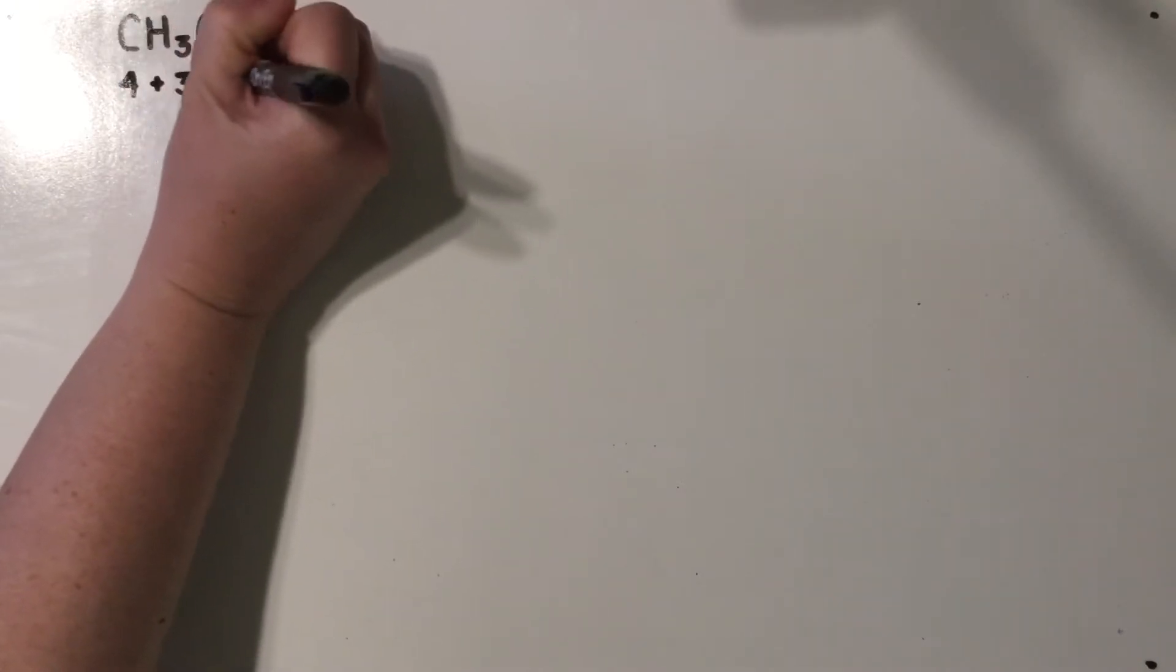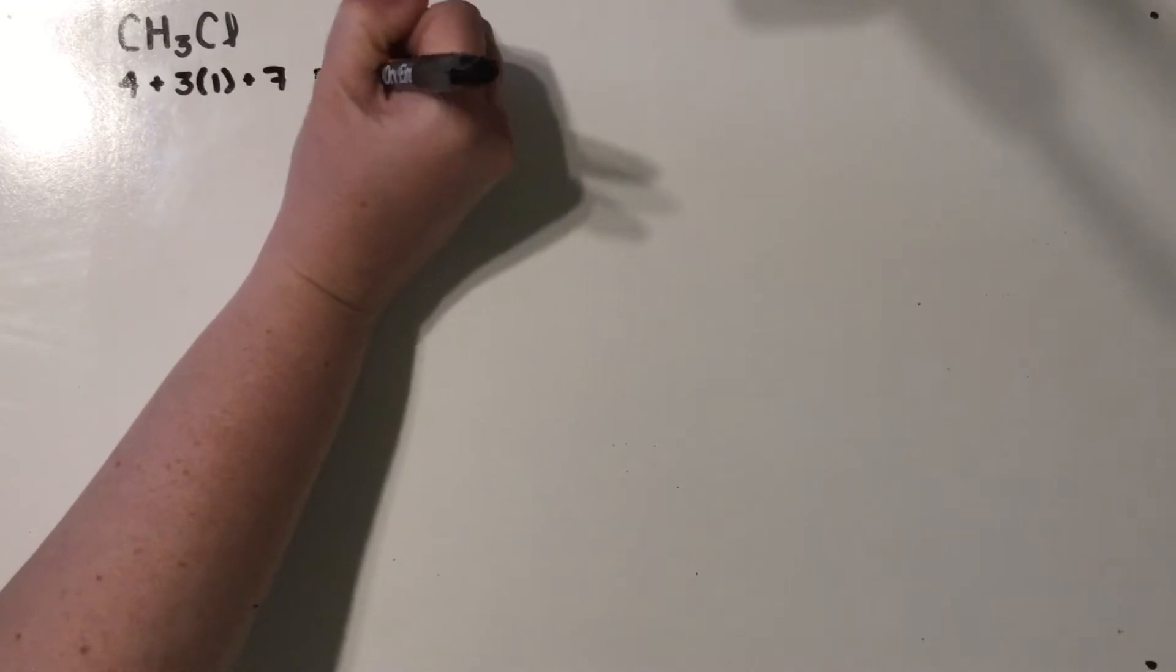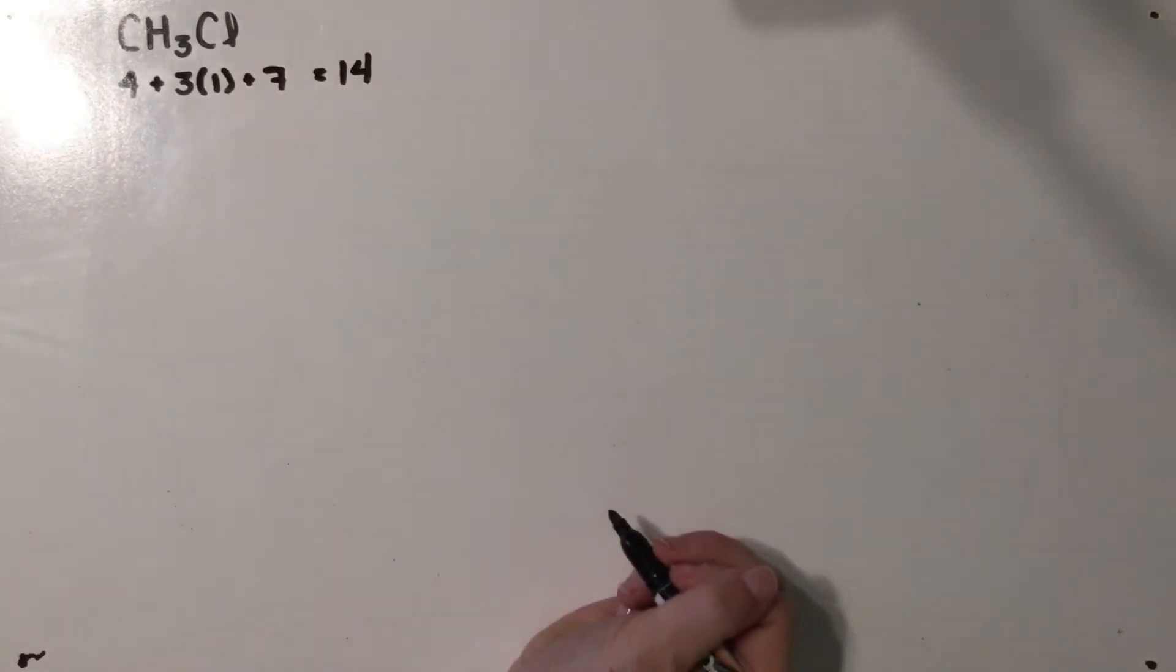Carbon has four valence electrons, each hydrogen has one, and the chlorine has seven, so that will give us a total of 14 valence electrons to play with.